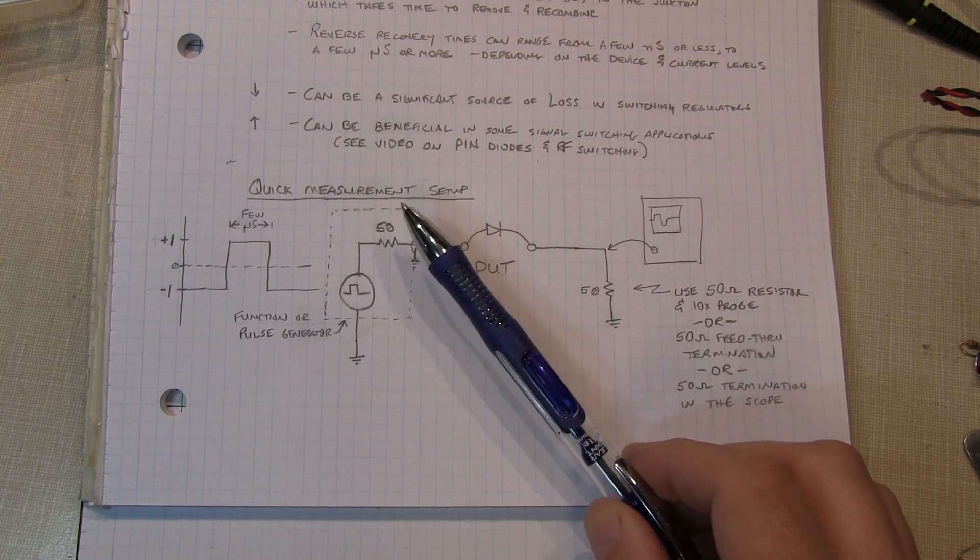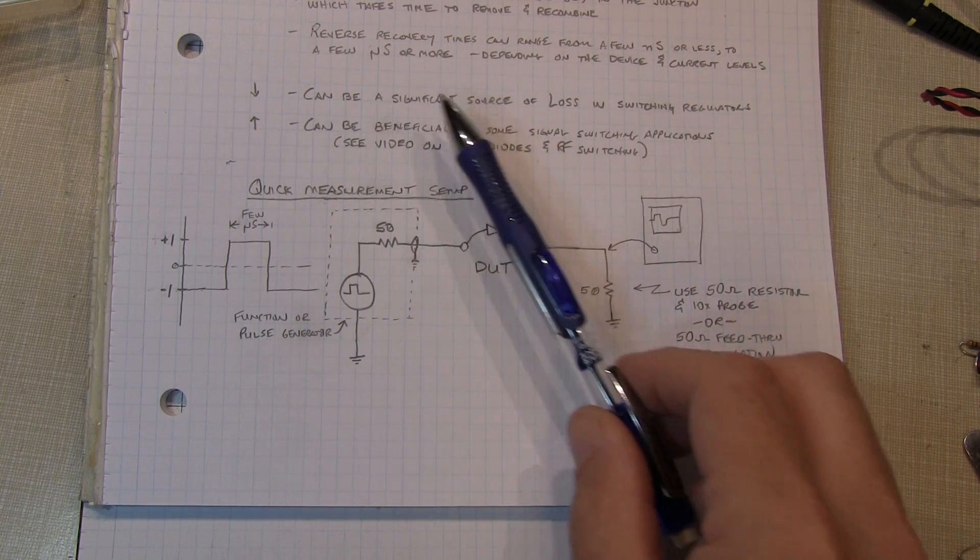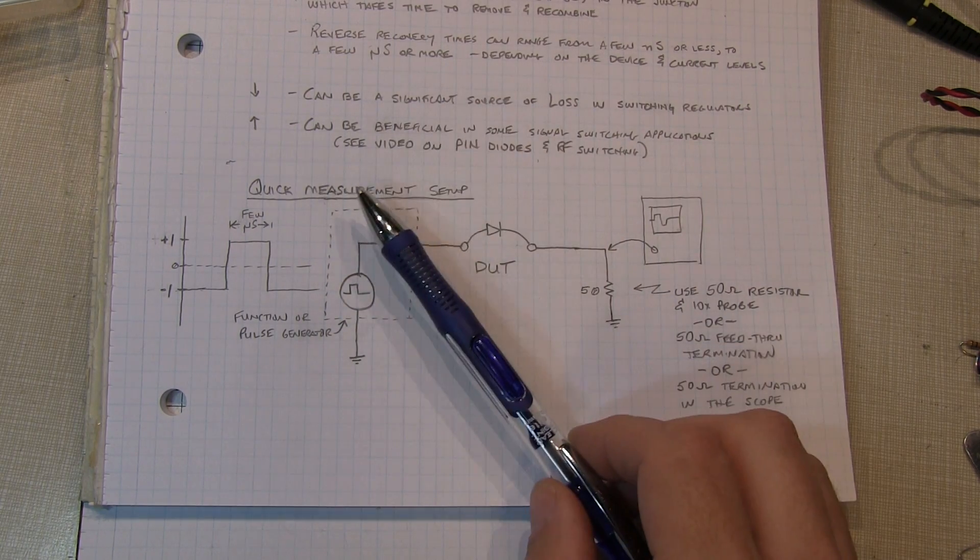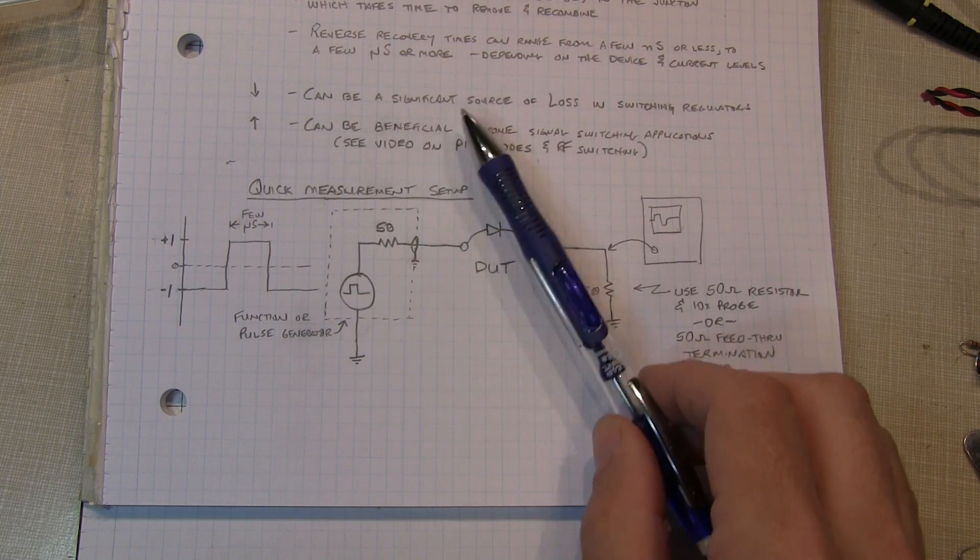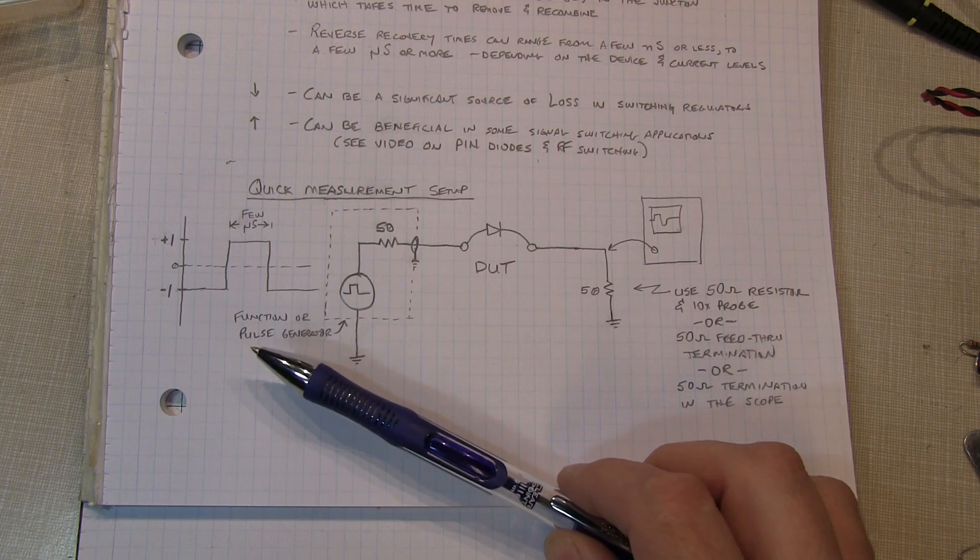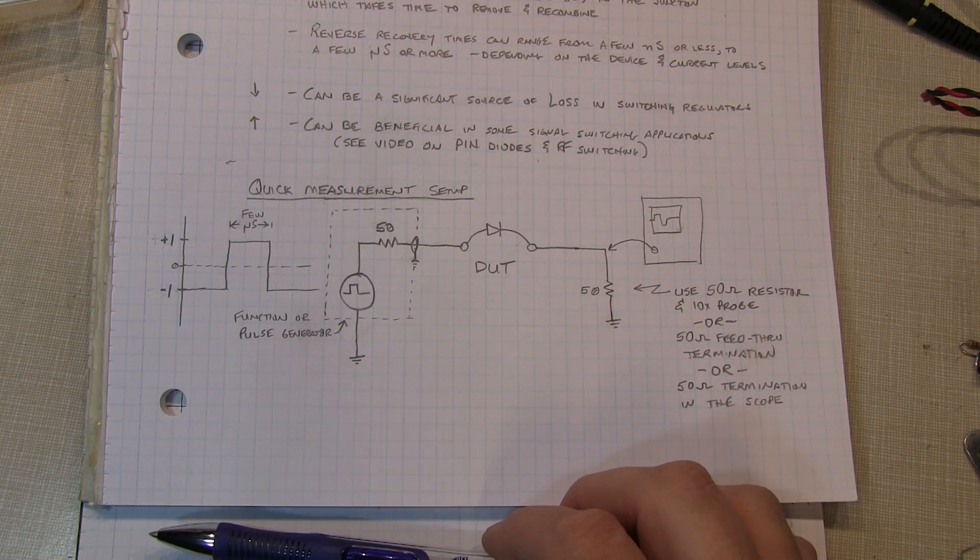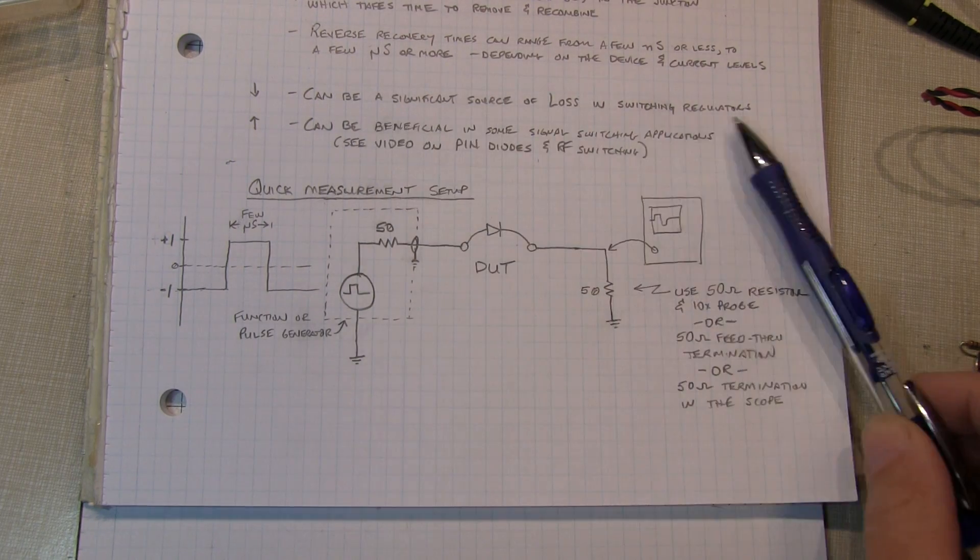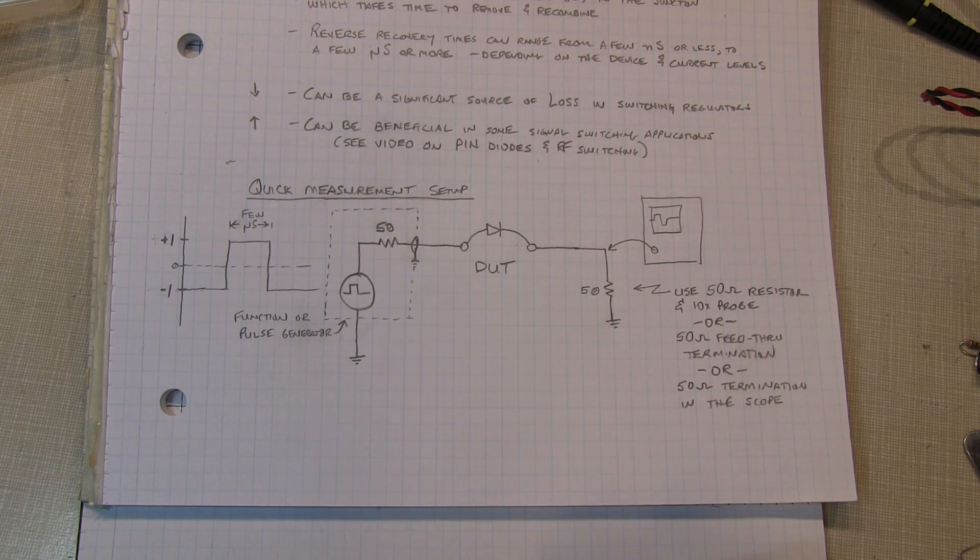It also could be a source of inaccuracy of a peak detector, or if we're trying to put charge onto a capacitor to measure the peak voltage level. If there's any reverse current, then that would bleed charge off of that capacitor and cause an inaccuracy in that measurement. So there can be some reasons why you'd want to think about what the reverse recovery is in your application.